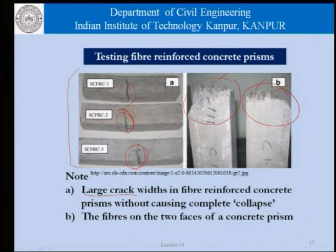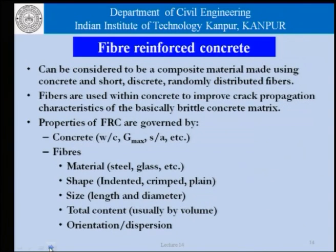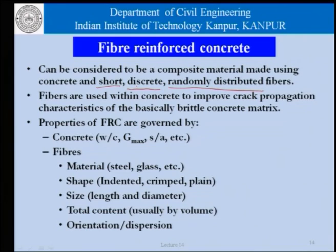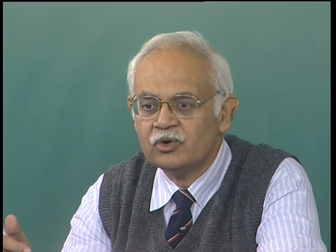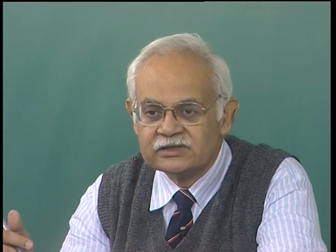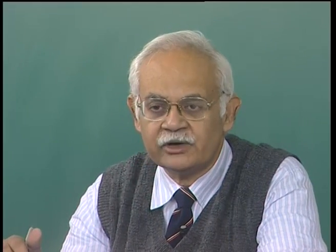Fiber reinforced concrete can be considered a composite material made of traditional concrete mixed with short, discrete, randomly distributed fibers — and there is a meaning to each of these words. Short means the fibers are short; discrete means the fibers do not lump together or behave as a group; and randomly distributed means they are oriented in all three directions without any special effort to orient them in a particular direction.